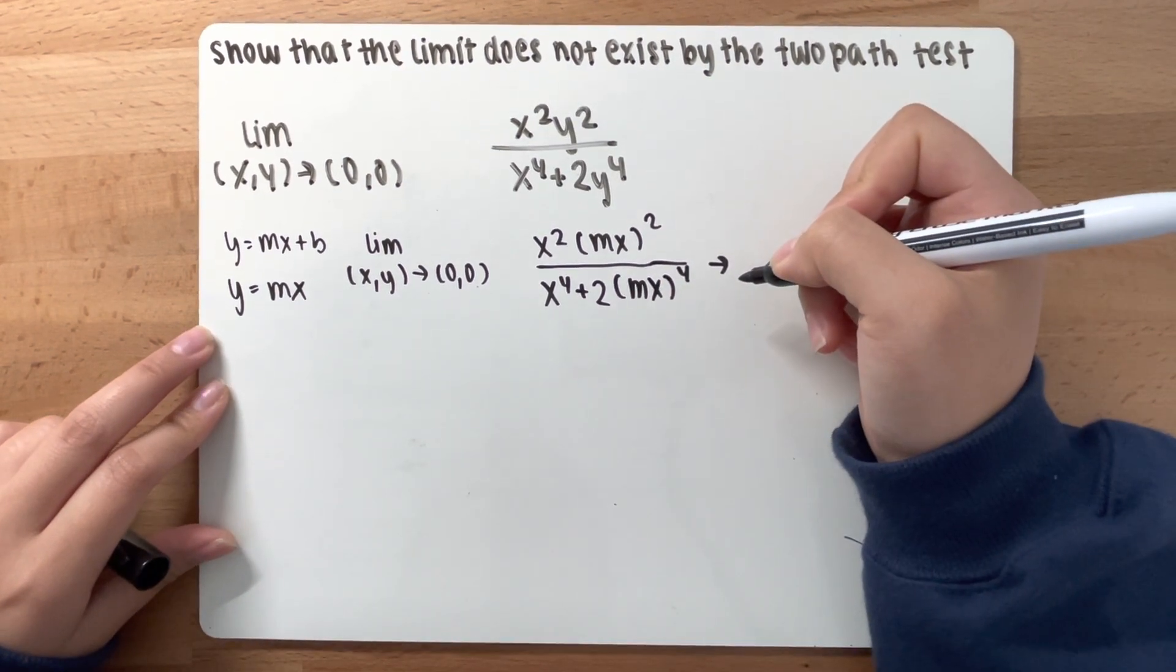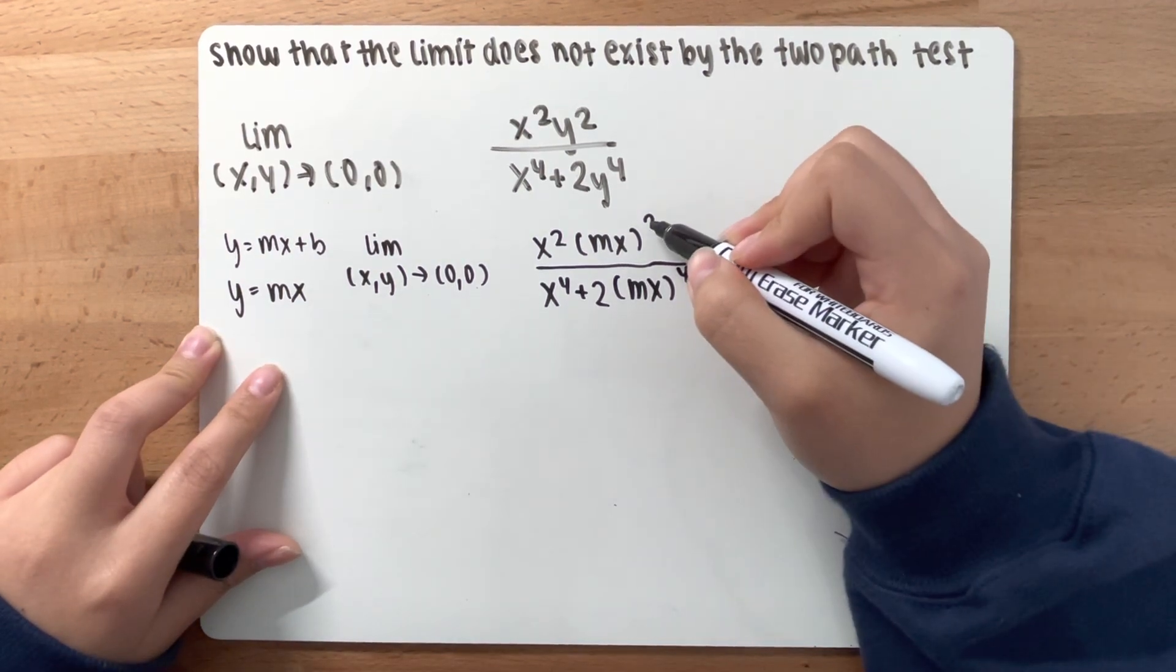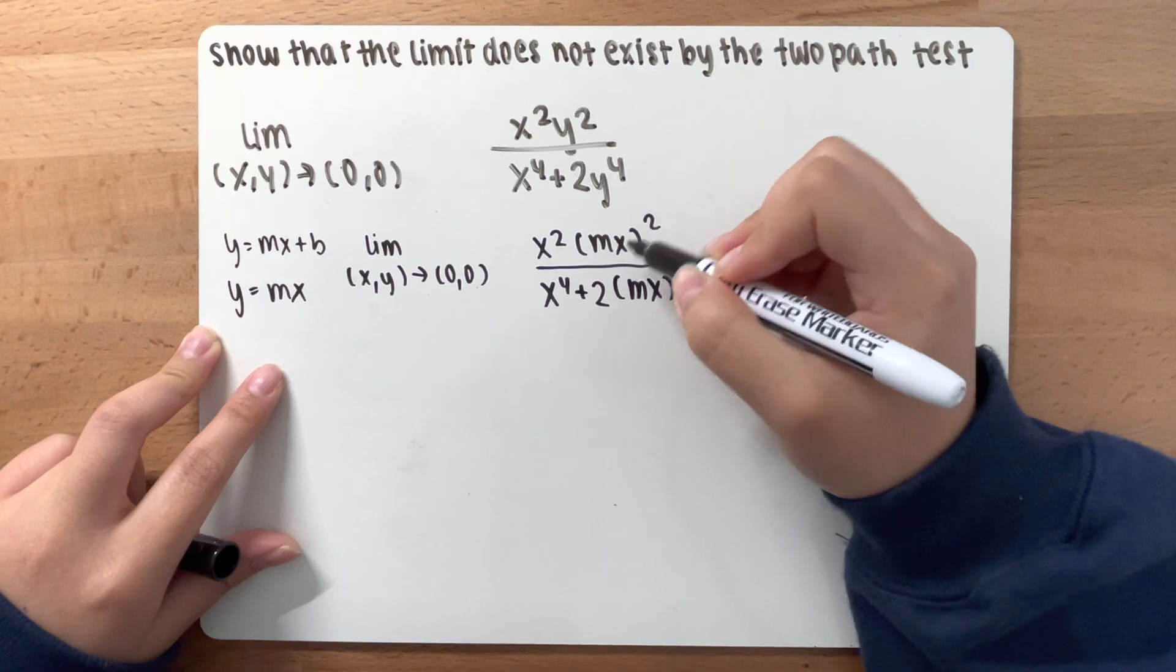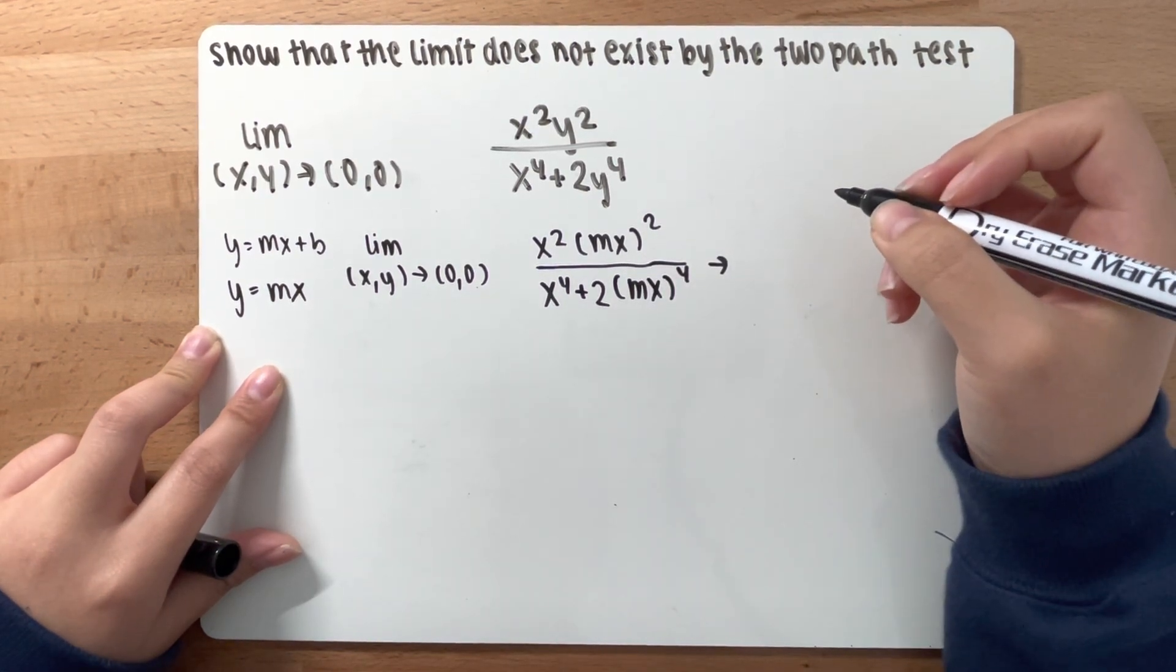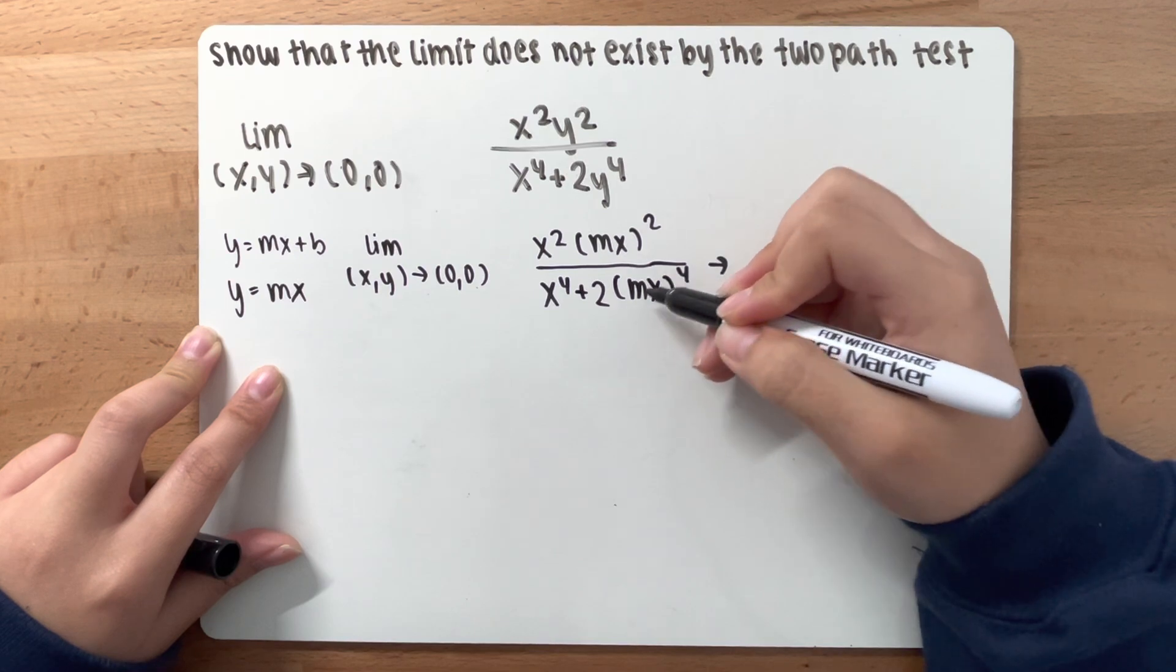Now, you can rewrite this because you could distribute the squared to m and to x. Same as here, you can distribute the fourth power to m and to x.